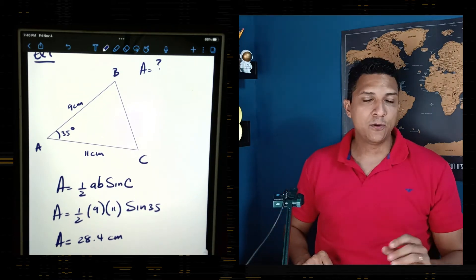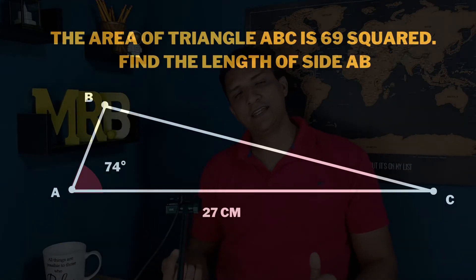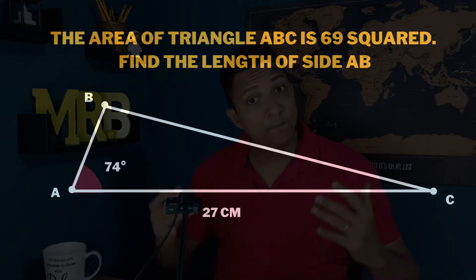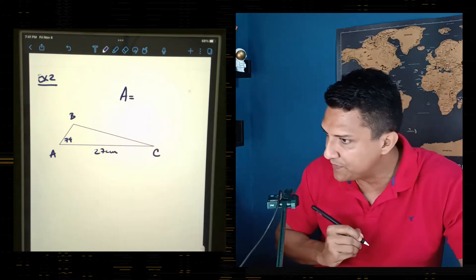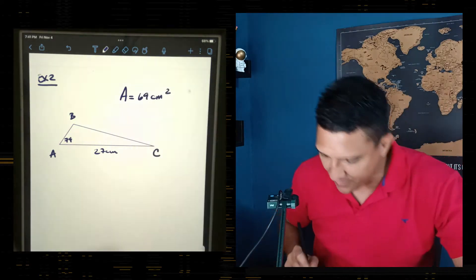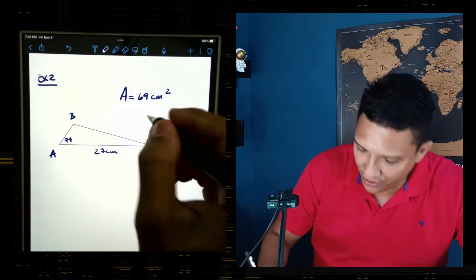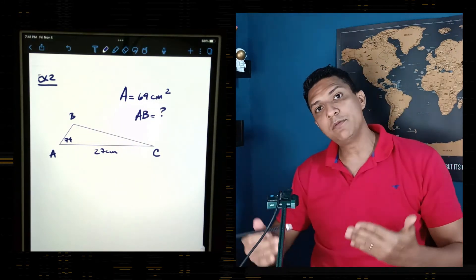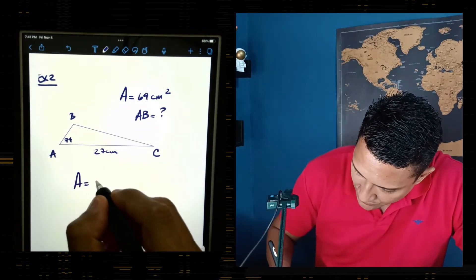Now let's see Example 2. This is a case where the area is given and one side is given, but the other side is what's requested. The area of this triangle is 69 square centimeters. We have angle 74 degrees and side AC = 27, but we do not have side AB — that's what the question asks for. Since the problem is about area, I'll use the area formula.